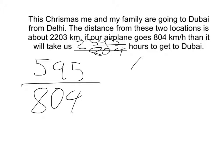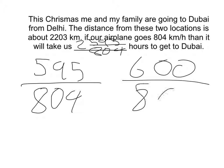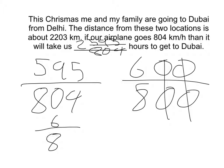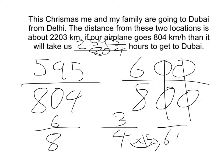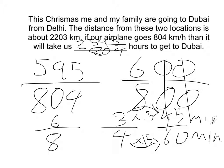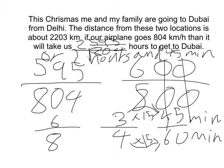595 is close to 600, and 804 is close to 800, simplified to 6 out of 8. Simplified even more: 4 times 15 equals 60, and 3 times 15 equals 45. There are 60 minutes in an hour. So it will take us 2 hours and 45 minutes to get to Dubai.